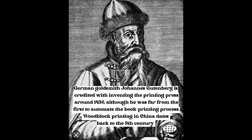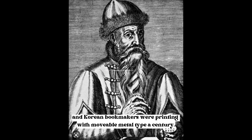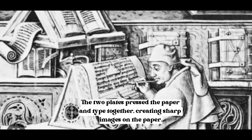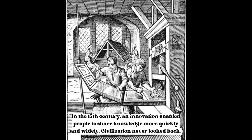Although he was far from the first to automate the book printing process — woodblock printing in China dates back to the 9th century, and Korean bookmakers were printing with movable metal type a century earlier. In Gutenberg's printing press, movable type was arranged over a flat wooden plate called the lower platen. Ink was applied to the type, a sheet of paper was laid on top, and an upper platen was brought down to press the paper and type together, creating sharp images on the paper.